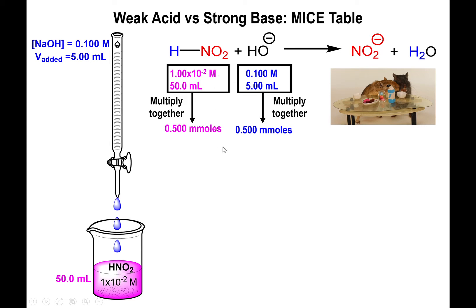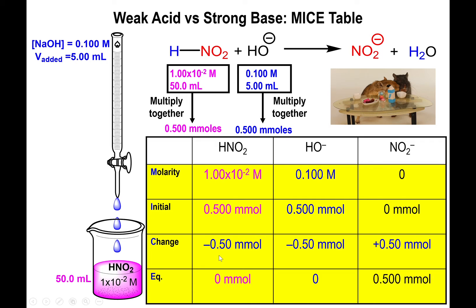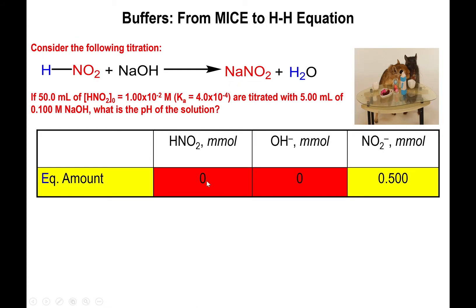If you apply your MICE table, you can see that you have the exact amount of both reactants, so the change is negative 0.5 for the reactants and positive 0.5 for the product. Carrying out the subtraction: 0.5 minus 0.5 is 0.0, plus 0.5 is 0.5. You have generated conjugate base, but the problem is that you have run out of conjugate acid.